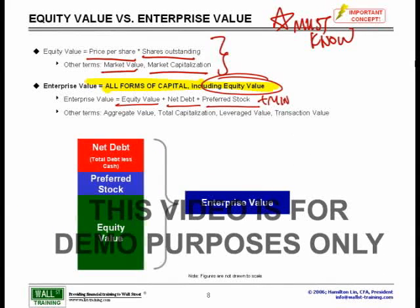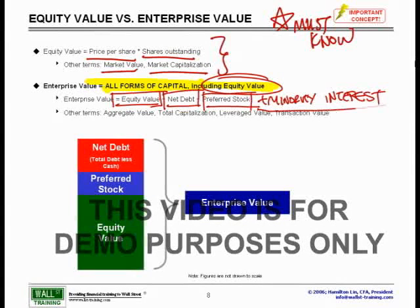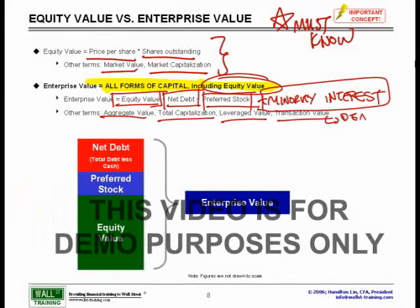The definition of enterprise value — sometimes commonly known as levered market cap as well — is simply equity value plus net debt plus preferred. I will also add another term called minority interest. Other terms for enterprise value include aggregate value, total capitalization, leveraged value, or transaction value, though that last one is more in a deal context.